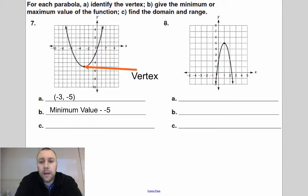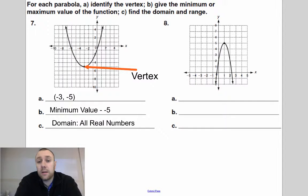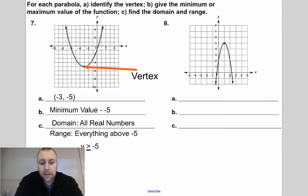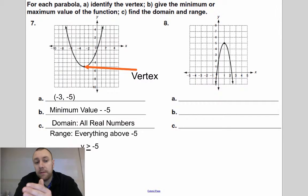The domain is going to be all real numbers — I can plug any x value in and it's going to give me a result. The range is everything above negative five, so I don't have any values below negative five. I would write that as y is greater than or equal to negative five, because negative five is the bottom of the graph and everything is above it.